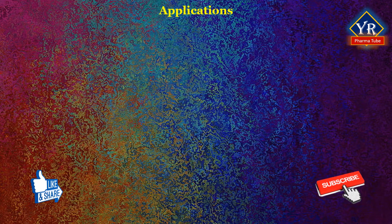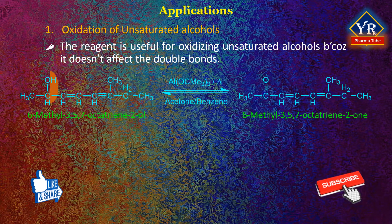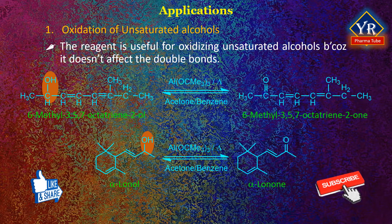Synthetic application 1: Oxidation of unsaturated alcohols. The reagent is particularly useful for oxidizing unsaturated alcohols because it does not affect the double bonds. For example, the alcoholic group of 6-methyl-3,5,7-octatrien-2-ol and alpha-ionol is converted to a ketonic group in 6-methyl-3,5,7-octatrien-2-one and alpha-ionone, respectively.